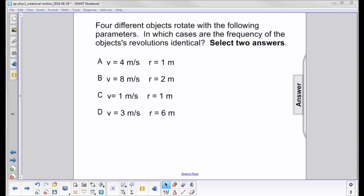Four different objects rotate with the following parameters. In which cases are the frequency of the object's revolutions identical? So here's what we have.